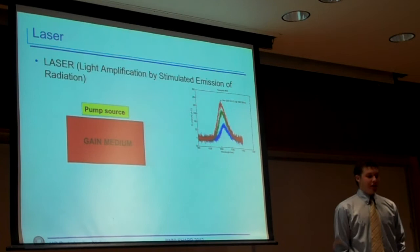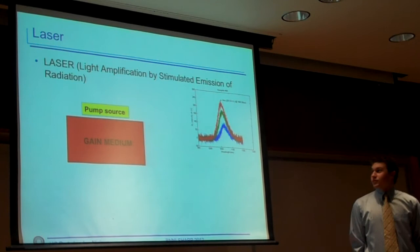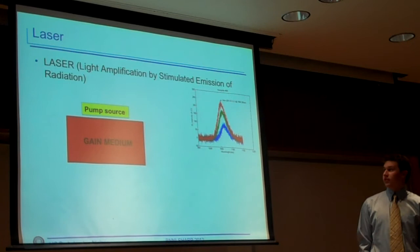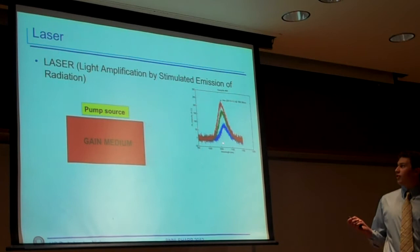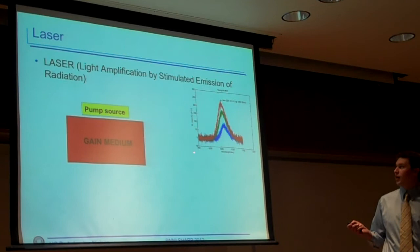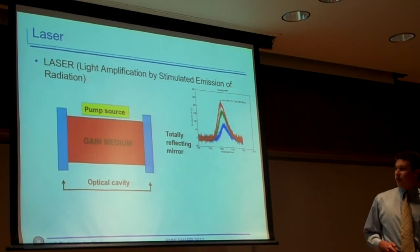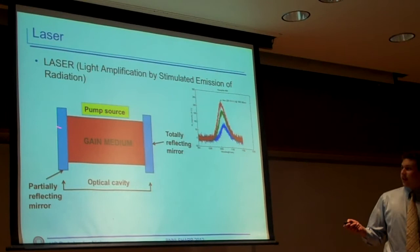A laser is light amplification by stimulated emission of radiation. You have your two essentials: the pump source and your gain medium. Gain medium is what actively amplifies the light that goes through it, and the pump source is what excites that gain medium. As you can see here, we have our normal spontaneous emission, which, if you increase the pump light or the pump source power, you will get a higher intensity. What you do to get a laser is you add in two mirrors to make an optical cavity, which the light, once inside the gain medium, will bounce back and forth between these mirrors until it is emitted as a laser.